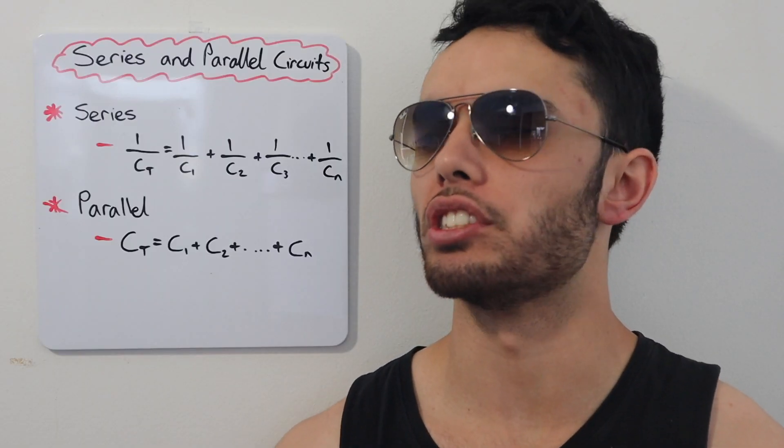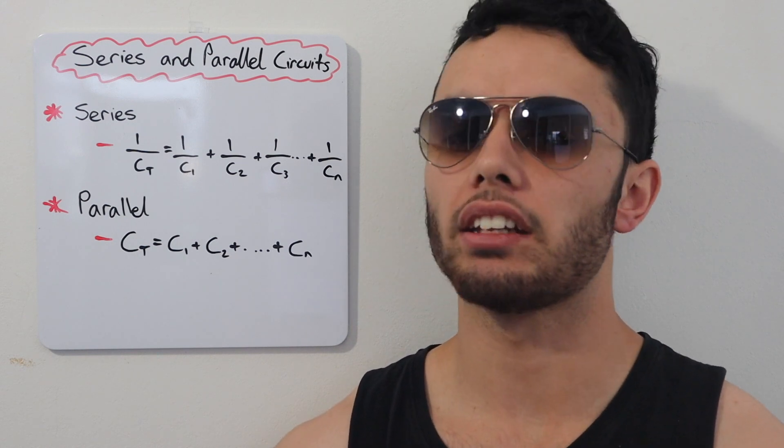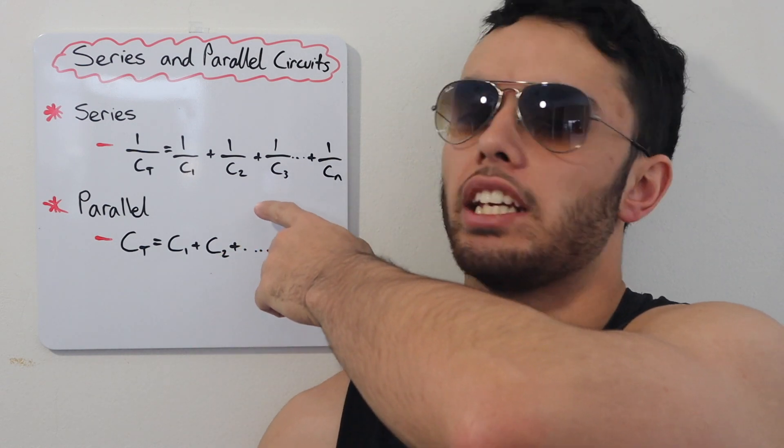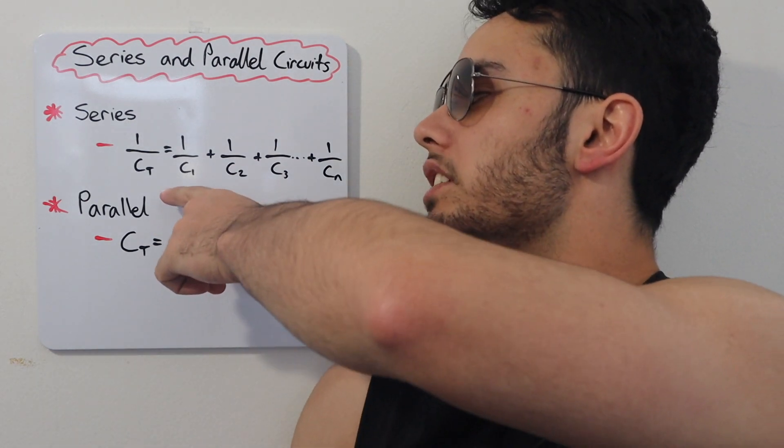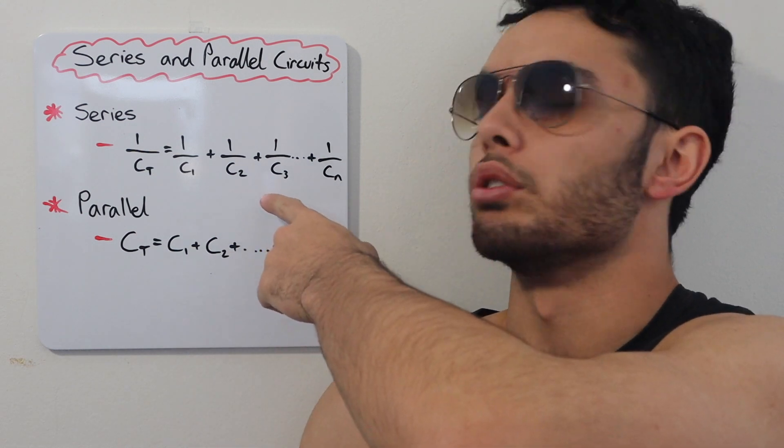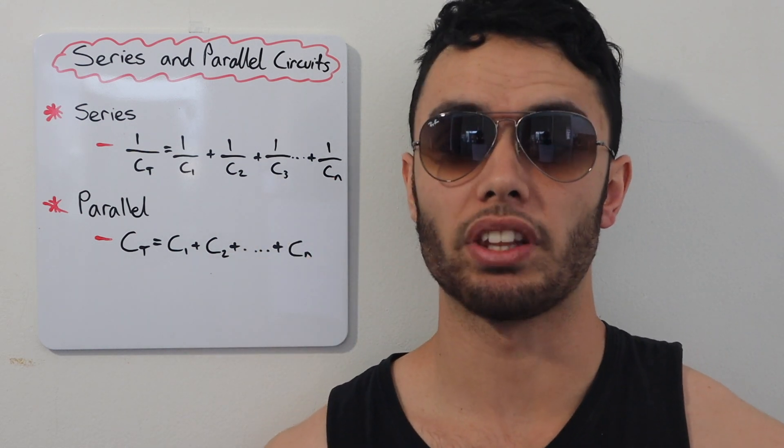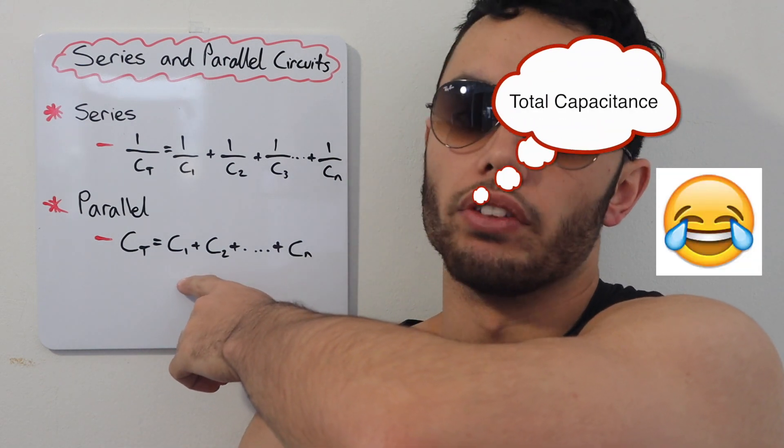Now let's talk about capacitance in series and parallel circuits. In series, the total capacitance is calculated the same way resistors are calculated in parallel circuits. Using the following equation: 1 over Ct, C total, capacitance total, equals 1 over capacitor 1, 1 over capacitor 2, and so on. The same thing applies with parallel circuits. The total resistance is the sum of the capacitors.